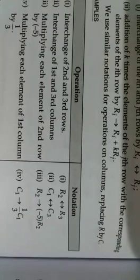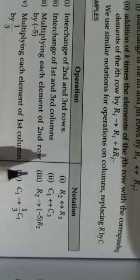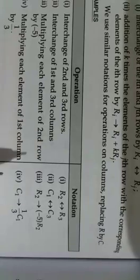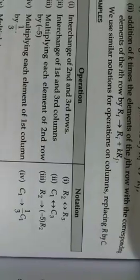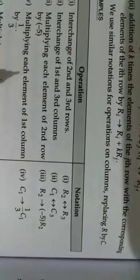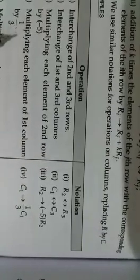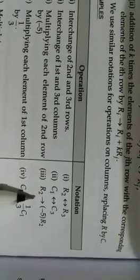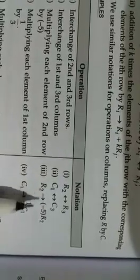After that, suppose we want to multiply with any value. We will write multiplying each element of second row by minus 5, so R2 tends to minus 5 R2. Or multiplying each element of first column by 1/3.